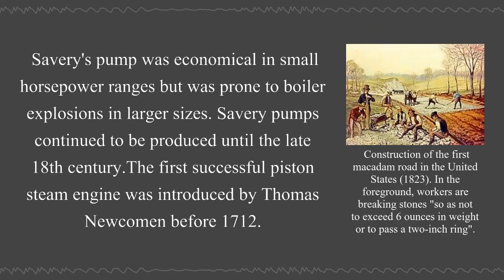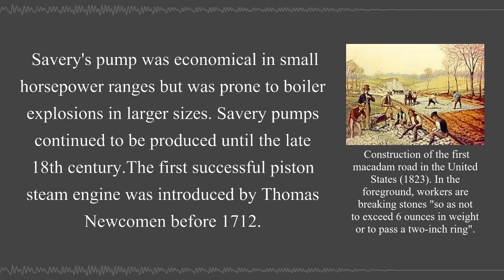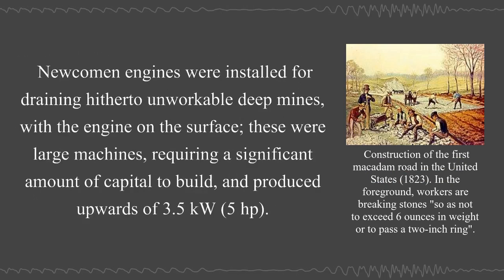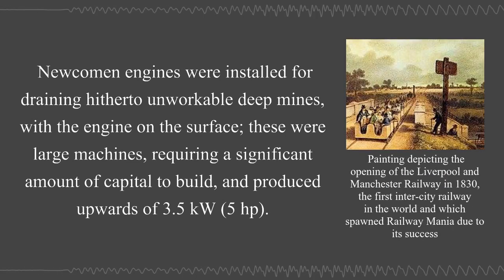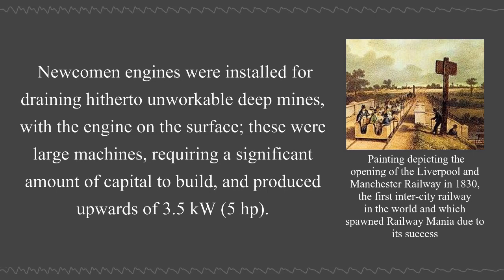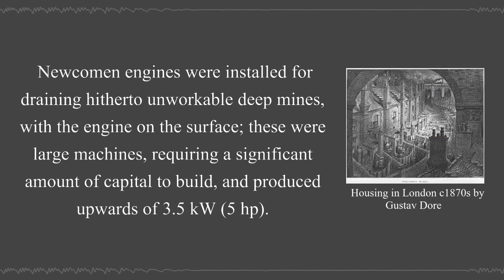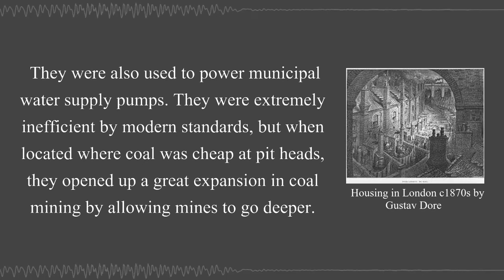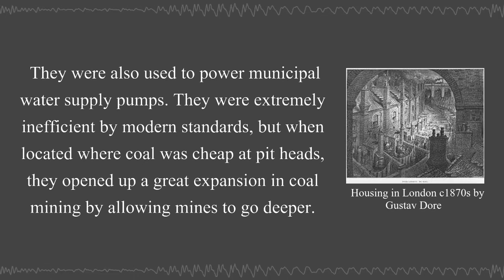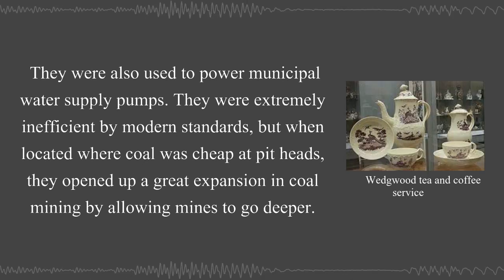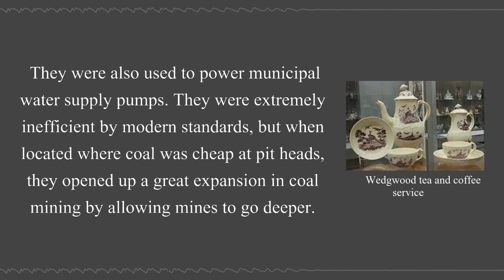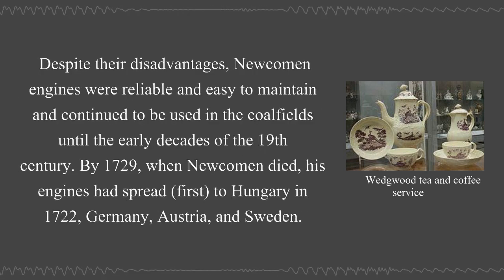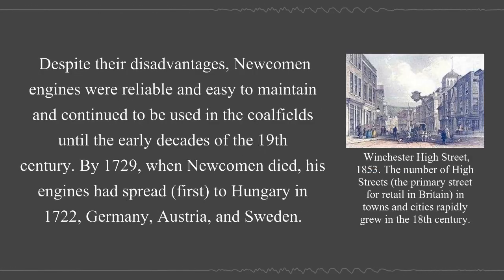The first successful piston steam engine was introduced by Thomas Newcomen before 1712. Newcomen engines were installed for draining hitherto unworkable deep mines, with the engine on the surface. These were large machines requiring significant capital to build. They were extremely inefficient by modern standards, but when located where coal was cheap at pit heads, they opened up a great expansion in coal mining by allowing mines to go deeper. Despite their disadvantages, Newcomen engines were reliable and easy to maintain, and continued to be used in the coal fields until the early decades of the 19th century.